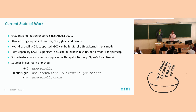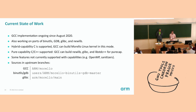We also have ports of binutils, GDB, glibc, and ulib. We support hybrid capability code generation from C, and GCC can build the Morello Linux kernel in this mode. We support pure capability code generation from C and C++, and GCC can build newlib, glibc, and libc++ for pure cap. Due to time constraints, there are some features we don't currently support, such as OpenMP and other sanitizers. At the bottom of the slide we have pointers to where you can find the work in the various upstream branches.